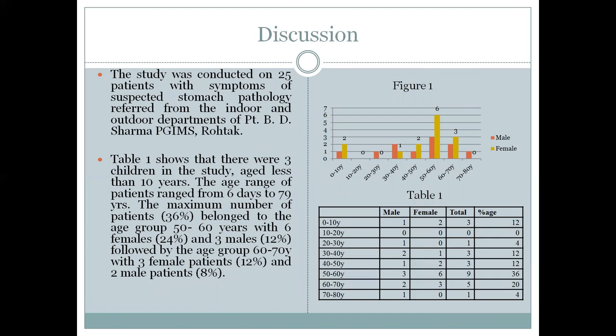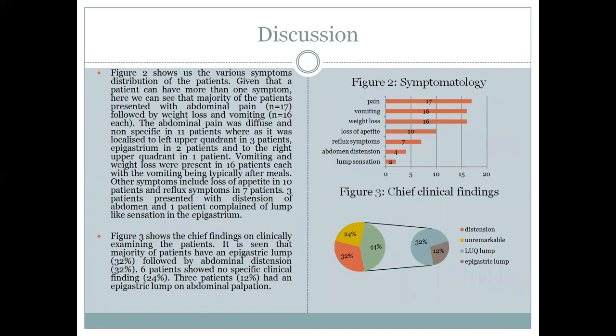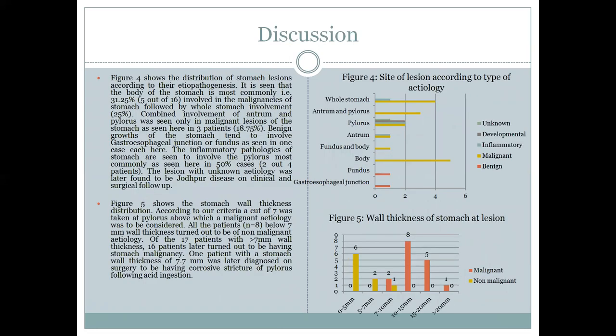The study included 25 patients with the maximum age group of 50 to 60 years, approximately 50 percent. The main presenting symptom was abdominal pain, followed by vomiting and weight loss. The most common clinical finding was an abdominal lump, most commonly seen in the left upper quadrant. The body of the stomach was the most common site of lesion, and lesions were mostly malignant. The cut-off for malignancy was a wall thickness of 7 mm; all lesions exceeding 7 mm were malignant, except one case of corrosive acid stricture of the stomach measuring 7.7 mm.